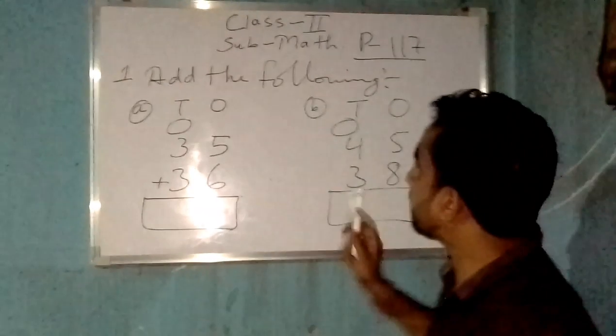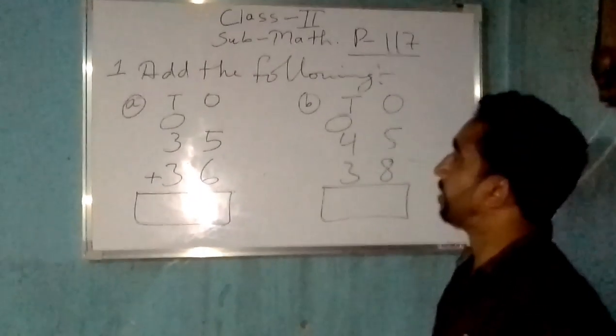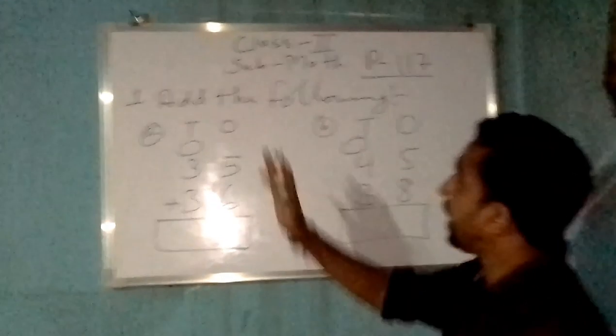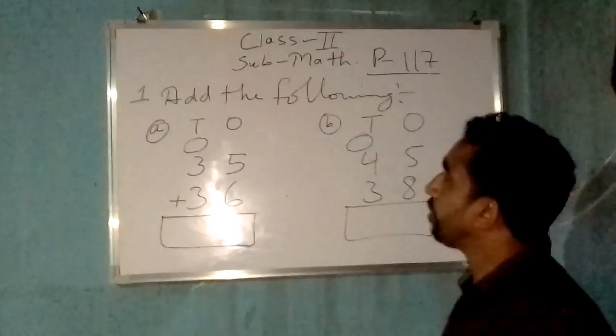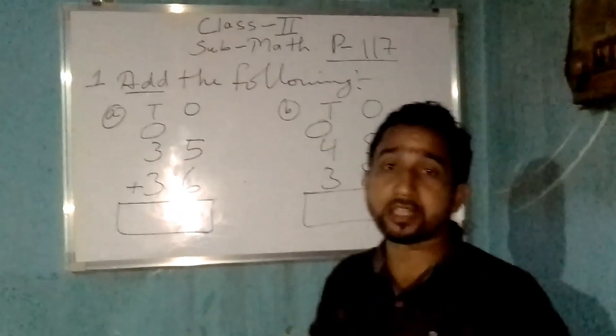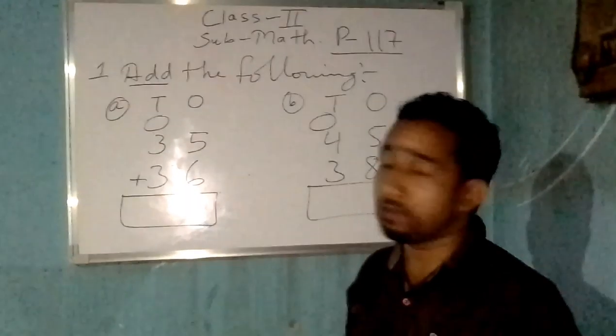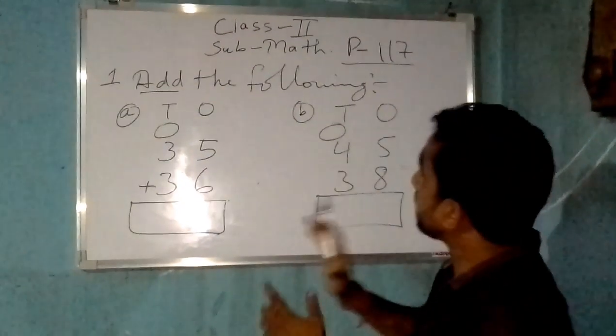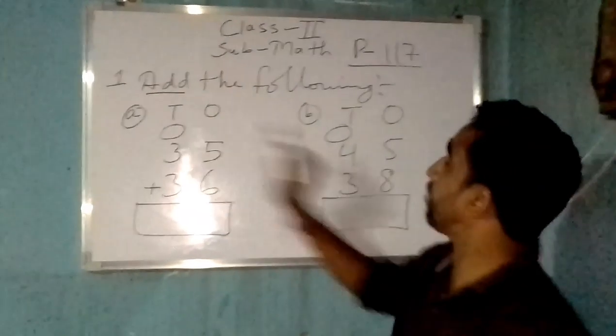On page number 117 we have a question which is written in very simple manner that says add the following. As you all know what is the meaning of add - add means to plus a number by another number. Here the questions are given as question number A and question number B.